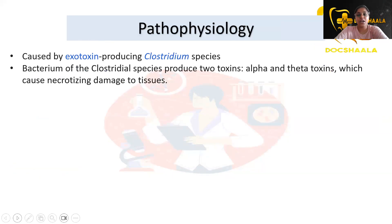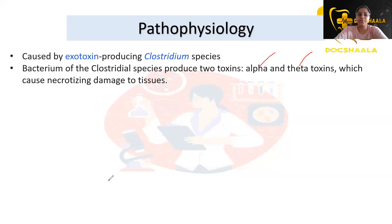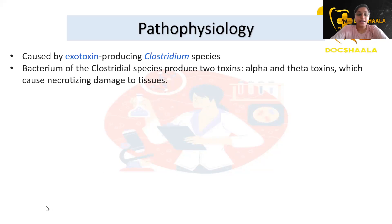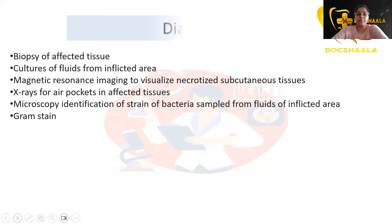Regarding pathophysiology, gas gangrene is caused by exotoxins produced by Clostridium species. They produce two toxins: alpha toxin and theta toxin. These are exotoxins that cause necrotizing damage to the tissues.